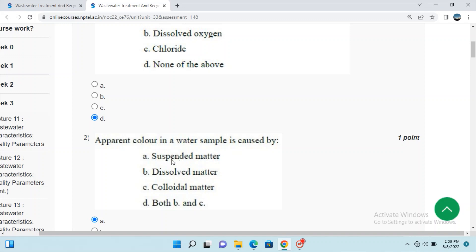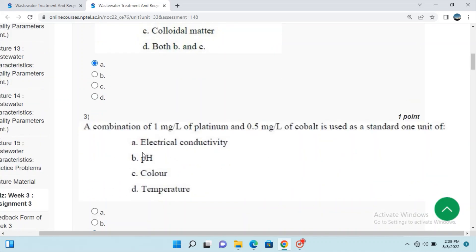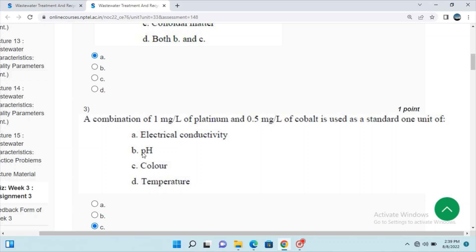Apparent color is given by both suspended matter and dissolved matter. But here the options A, B, C don't match both A and B, so I tick on A.